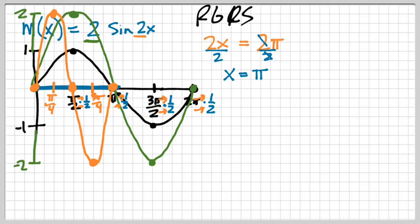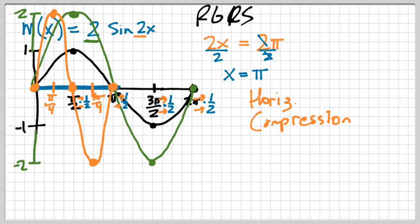So the whole sine graph got horizontally compressed — there was a horizontal compression because of the 2, and we do the opposite of what's with x, so we compress rather than stretch. Dividing by 2 gives where the graph should end, and then I multiply everything by 1 half to find my new critical values. We're going to do a lot more with this — this is just an intro — but hopefully this gives you an idea.